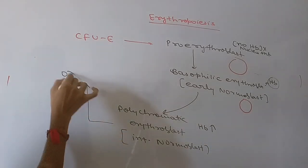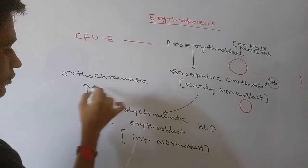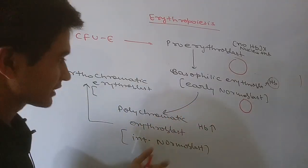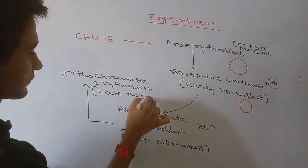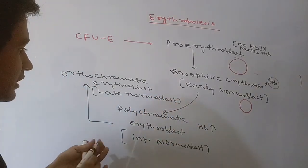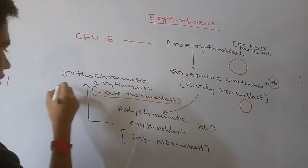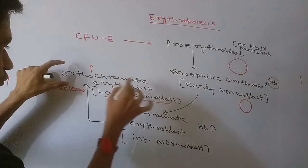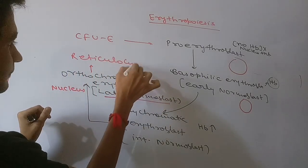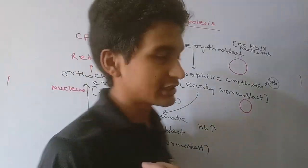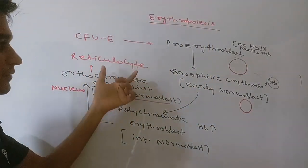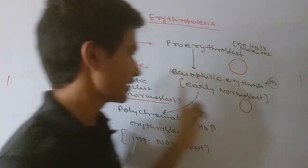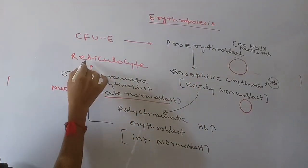From the polychromatic erythroblast, the next stage is the orthochromatic erythroblast, also known as the late normoblast. This is the last stage in which a nucleus is visible, because after this stage the nucleus disappears. Following this is the reticulocyte stage, where some basophilic materials and remnants of Golgi apparatus and endoplasmic reticulum are still present, but the nucleus is absent.